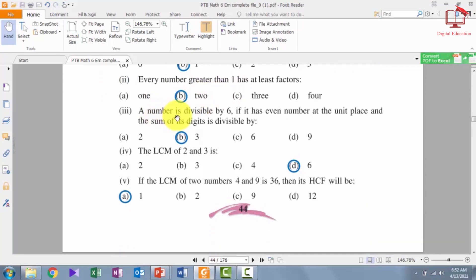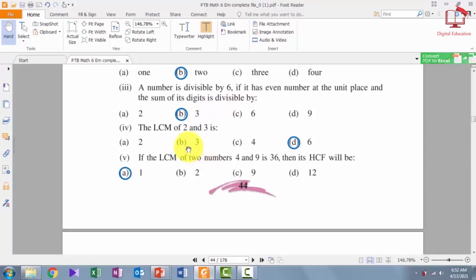Number 3. A number is divisible by 6 if it has even number at the unit place and the sum of its digits is divisible by 3. Number 4. The LCM of 2 and 3 is 6. Number 5. If the LCM of two numbers 4 and 9 is 36 then its HCF will be 1.